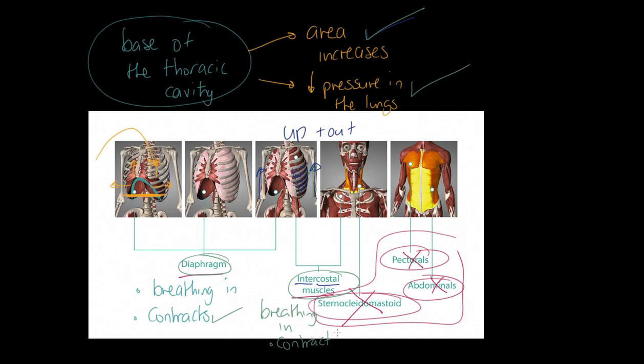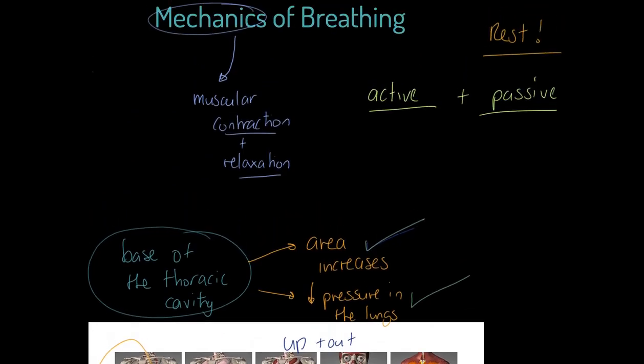So to confirm: for breathing in during rest, we have the diaphragm contracting and the intercostal muscles contracting. That is how that happens. Would you agree with me that the active part is what we just addressed? It's active because the diaphragm and intercostal muscles contract, pull the ribs upwards and outwards, decrease the volume of the thoracic cavity, and decrease pressure.